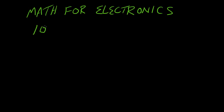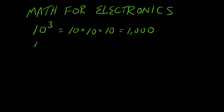I think part of the problem is people have a hang-up with exponents. Let's say something like 10 to the third, or 10 cubed, is 10 times 10 times 10, which is the same as 1,000. 10 to the first power is just 10 all by itself. 10 to the zeroth power, which I don't think a lot of people know, is 1.